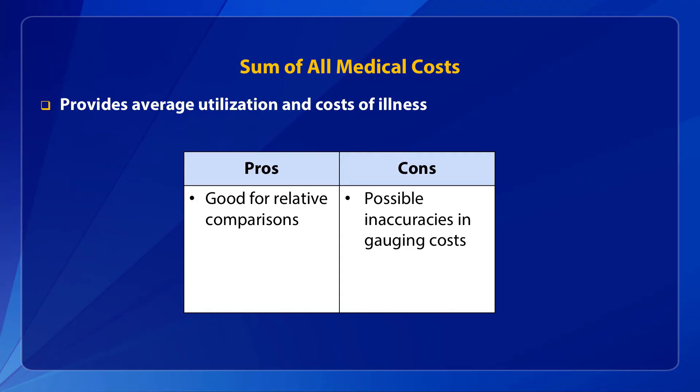The cons are that we may not properly isolate the burden associated with a particular disease or identify costs of comorbidities — other illnesses that might be associated with the disease. Another problem is that some of the medical costs included would also be the same for the non-hypertensive group, such as the costs of preventive teeth cleanings. So the total medical costs may overinflate the medical resources required for the hypertensive population.